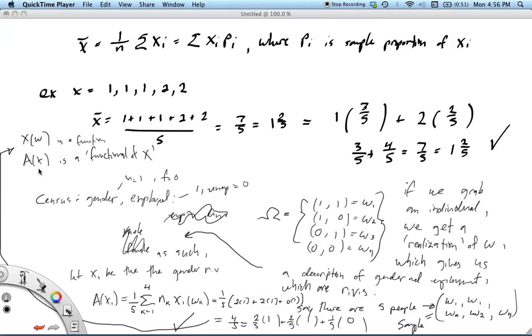Okay, so basically we map ω_1, okay, with respect to x_1. x_1 of ω_1 is equal to 1. So x_1 is a random variable, and it's a function of this sample space.